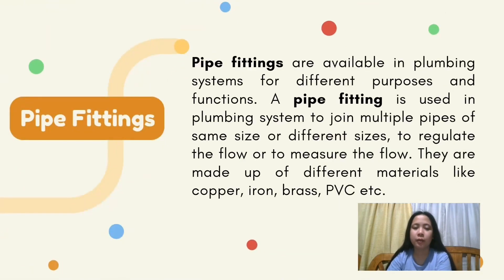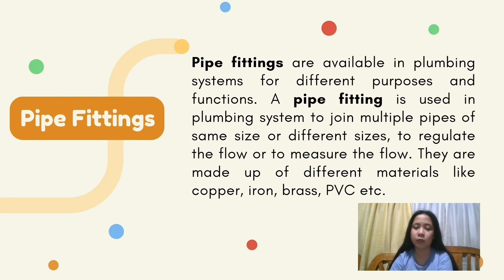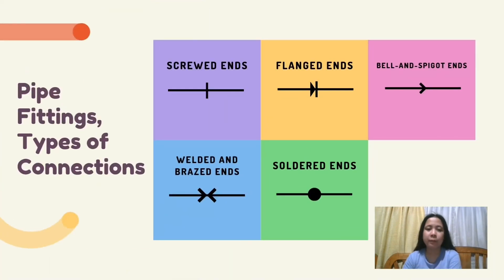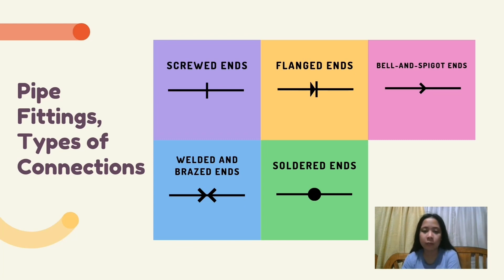Pipe fittings. Pipe fittings are available in plumbing systems for different purposes and functions. They are used to join multiple pipes of the same size or different sizes, to regulate the flow, or to measure the flow. They are made of different materials like copper, iron, brass, PVC, etc. Types of pipe fitting connections: screwed ends, flanged ends, bell and spigot ends, welded and brazed ends, and soldered ends.